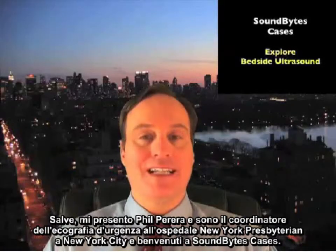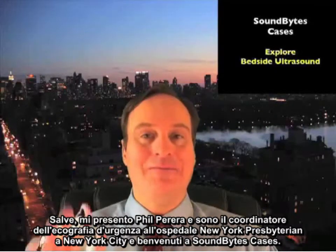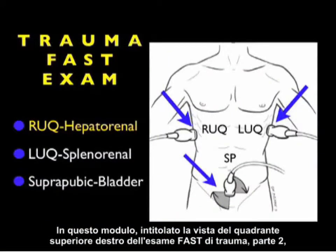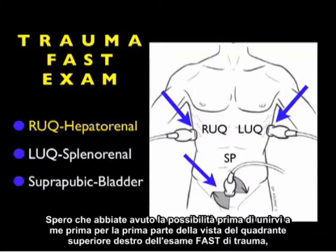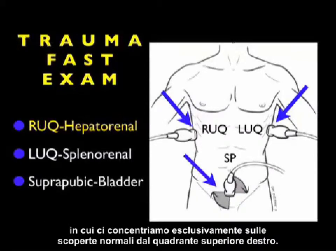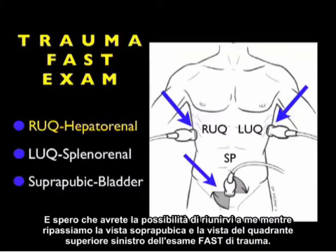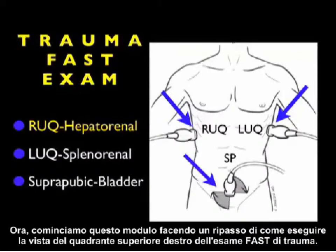Hello, my name is Phil Pereira and I'm the Emergency Ultrasound Coordinator at New York Presbyterian Hospital in New York City, and welcome to Soundbites Cases. In this module entitled Part 2 of the Right Upper Quadrant View of the Trauma Fast Exam, we're going to focus entirely on positive findings from this view. Hopefully you've had a chance to join me for Part 1, where we focused on normal findings, and hopefully you'll join me as we go through the Left Upper Quadrant and Suprapubic Views. Let's begin with a review of how to perform the Right Upper Quadrant View of the Trauma Fast Exam.